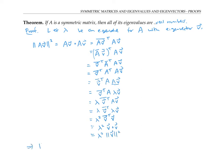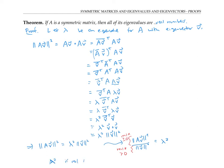So we have |Av|² = lambda² · |v|². Since v is an eigenvector, it's nonzero, so |v|² > 0, and we can divide both sides to get lambda² = |Av|² / |v|². Now |v|² is a positive real number and |Av|² is non-negative real, so lambda² is a non-negative real number, which means lambda itself must be a real number. That's what we wanted to prove.